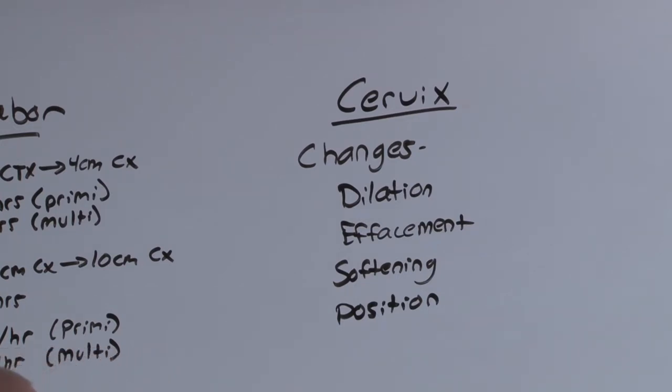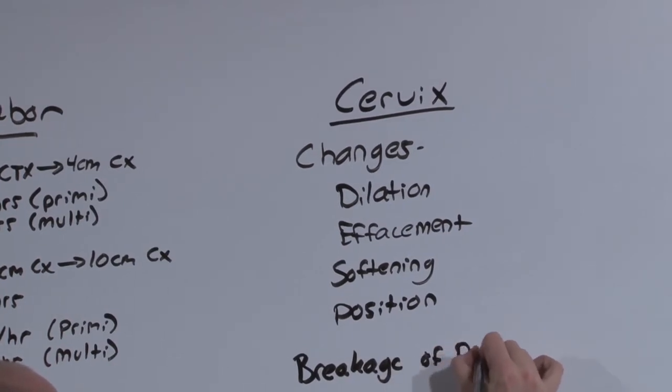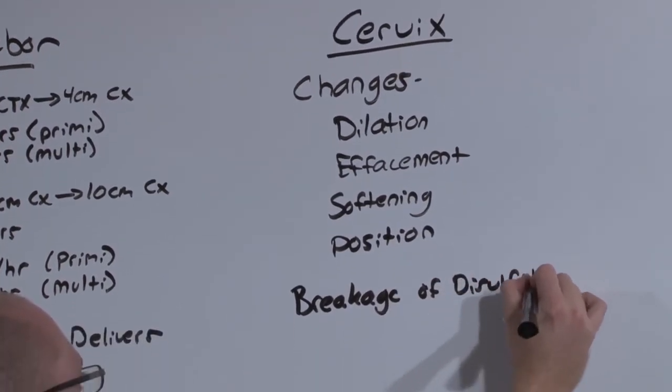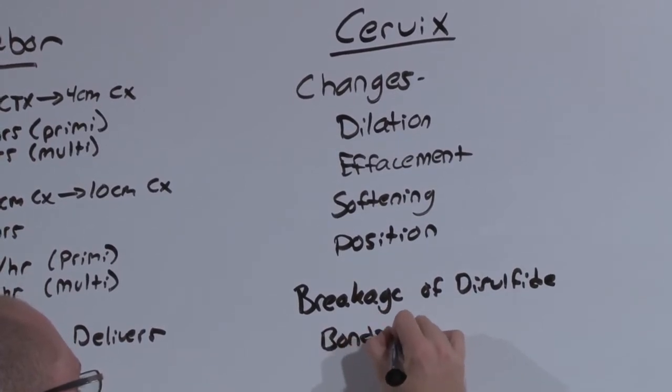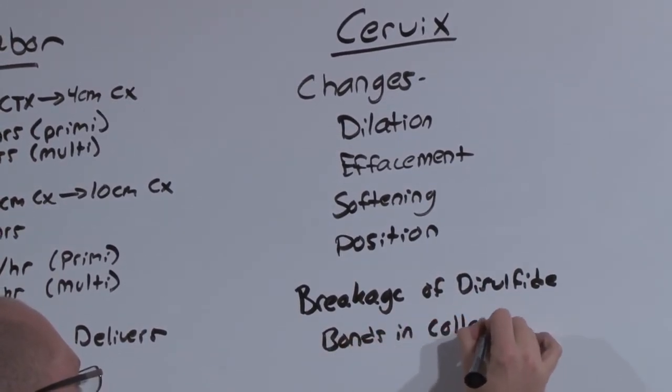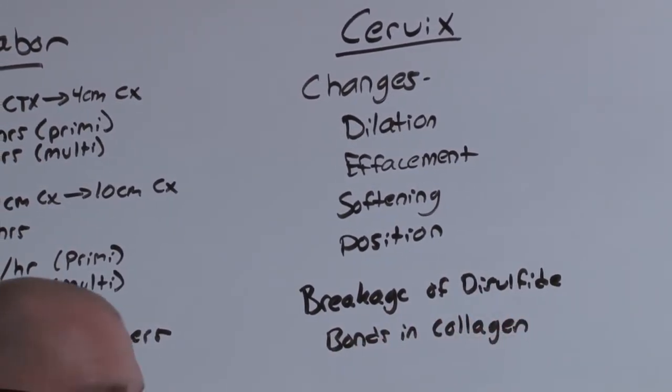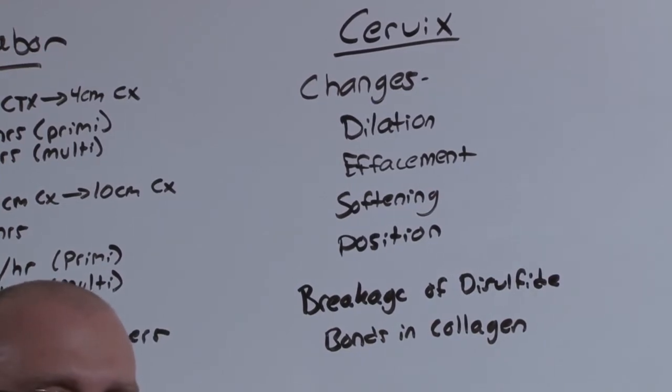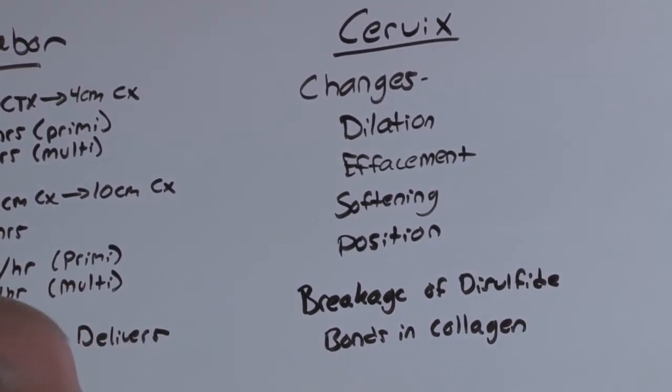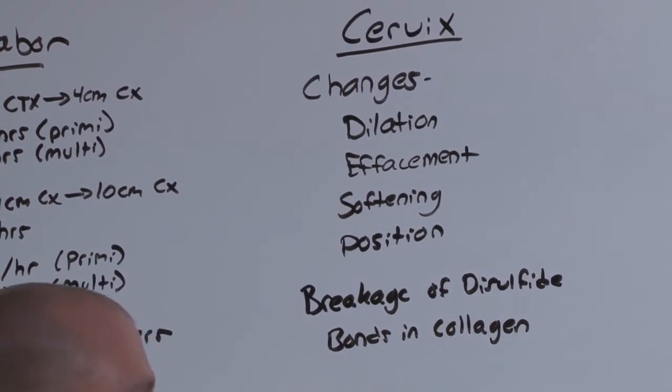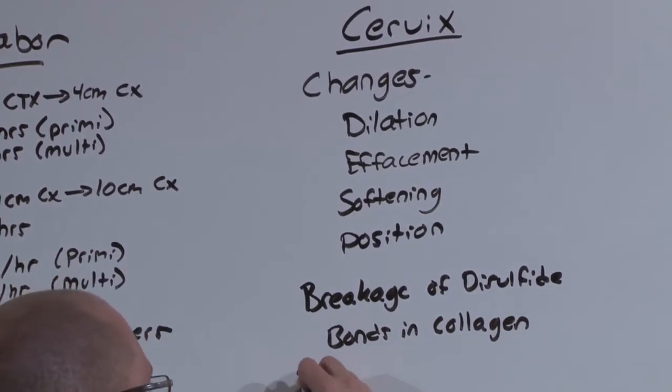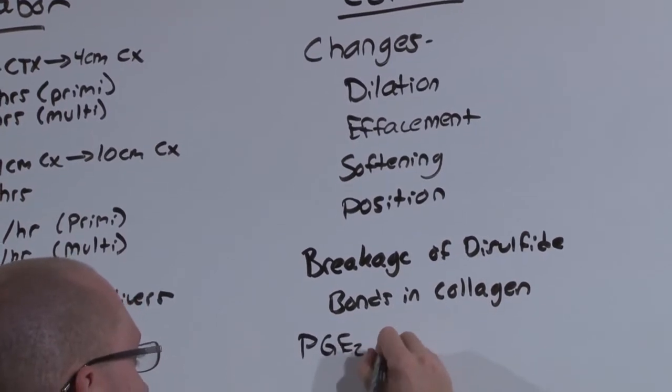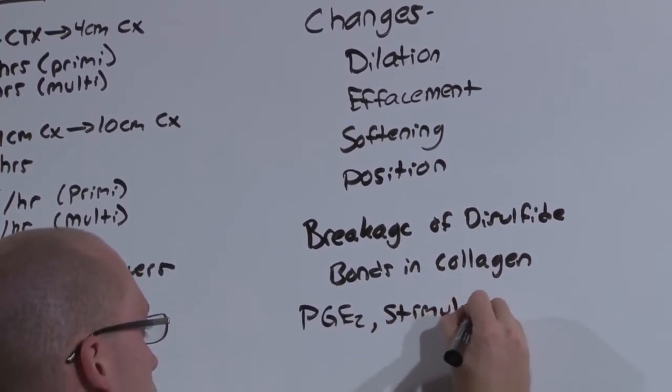But one of the things that likes to come up on both the boards and the wards, is that all of these changes are made by breakages of disulfide bonds in collagen. It's how this change is able to happen so fast and then reverse itself. The cervix isn't elastic, it's just by breakage of disulfide bonds. And that breakage is mediated by prostaglandin E2, stimulated by engagement.